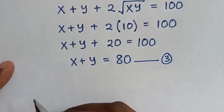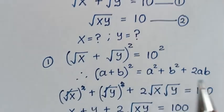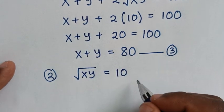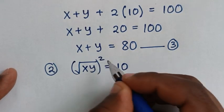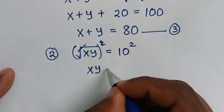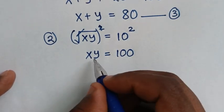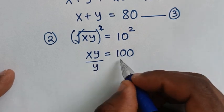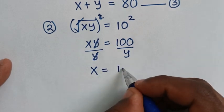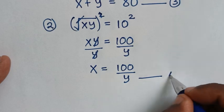Next, we deal with equation 2: √(xy) = 10. Squaring both sides, the square root cancels and we get xy = 100. Making x the subject, we divide both sides by y, giving x = 100/y. We'll call this equation 4.